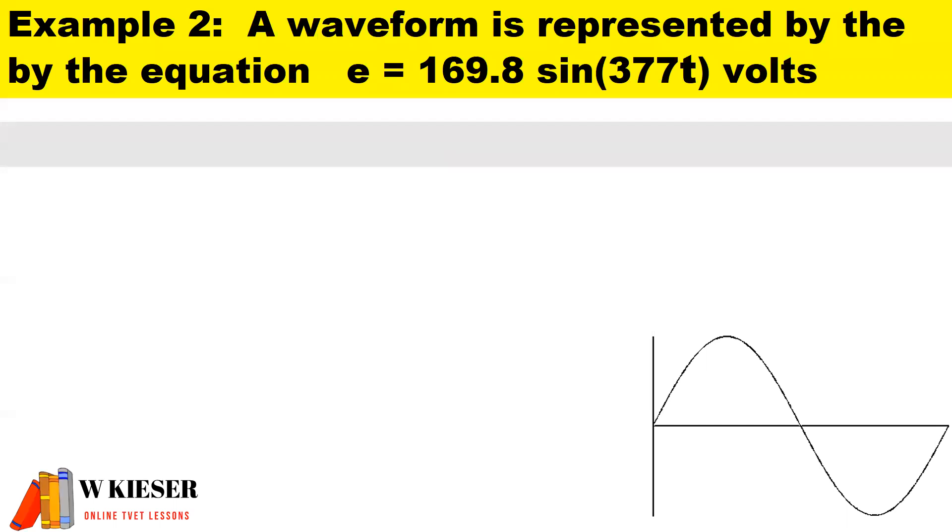This brings us to the first example for AC circuit theory. A waveform is represented by the equation e equals 169.8 sine, and inside of the brackets we have 377 which is the angular velocity in radians per second. Now remember to convert radians per second into degrees we multiply by 57.3.